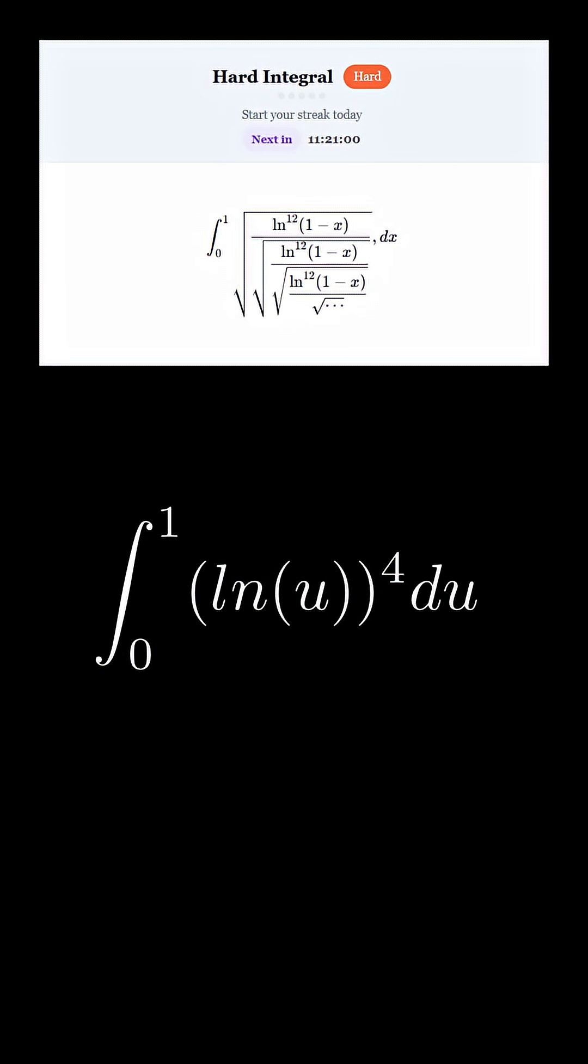Now let's do a z-substitution where z equals ln u. So therefore, dz equals 1 over u du. Multiply both sides by u.